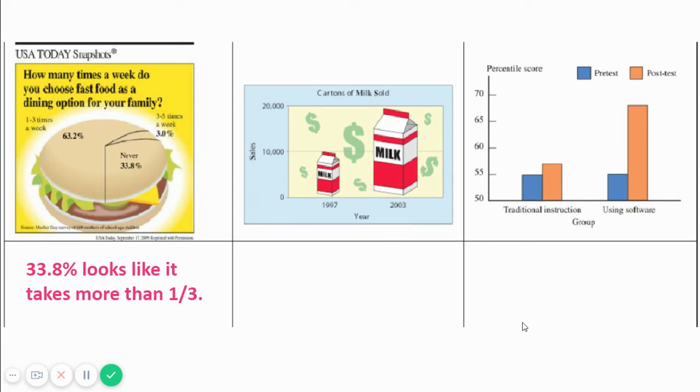USA Today. In the second one, in 1997, the milk sales were 10,000. 10,000 what? We have no idea. The y-value needed to be more specific, but 10,000 of whatever it was. In 2003, 20,000, same units. We don't know what the units were. Cartons of milk? Maybe to a high school? I don't know. We need more labeling. We need more information.